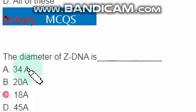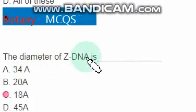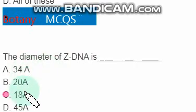The diameter of Z-DNA is 18 angstroms. The right option is option C.